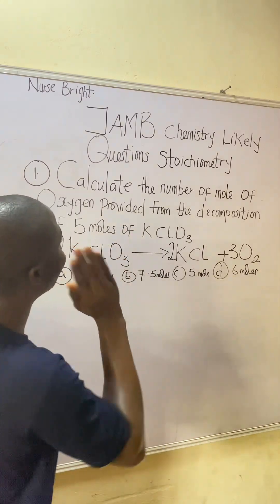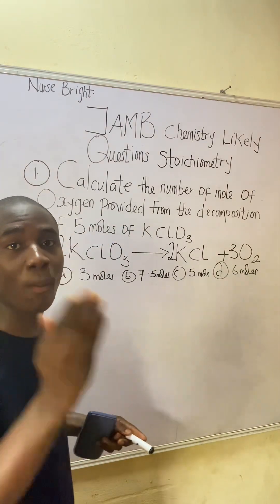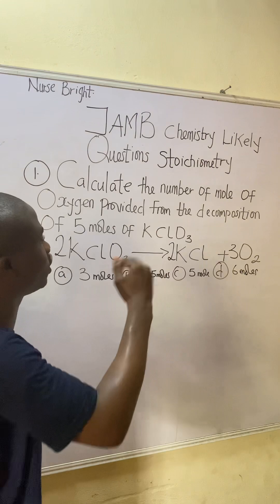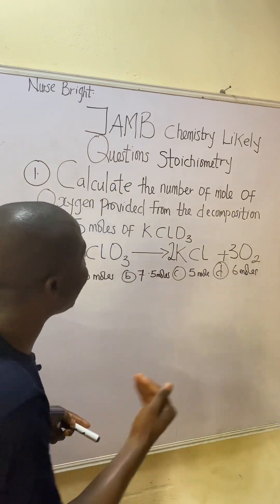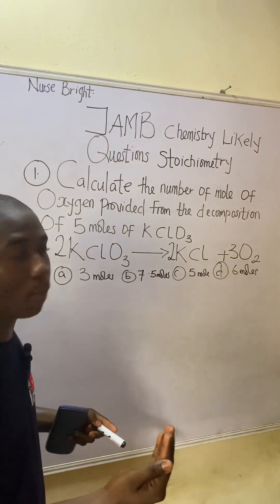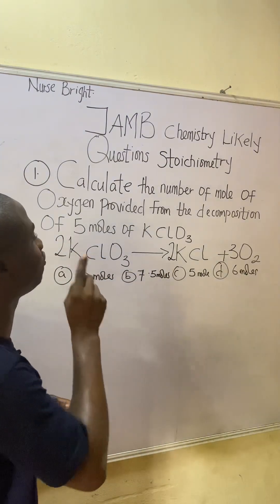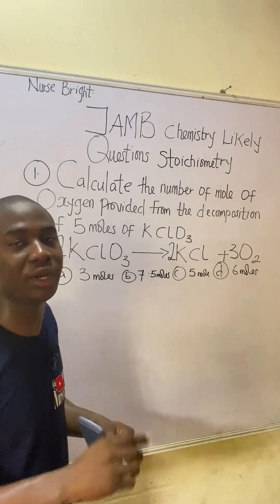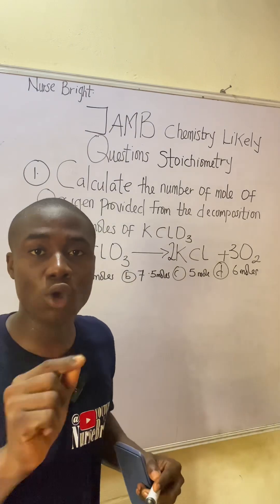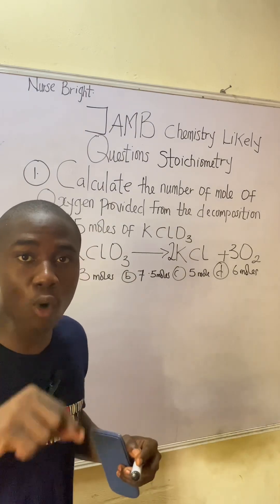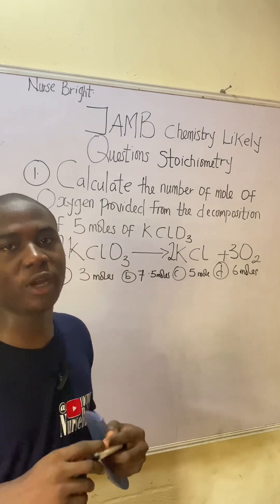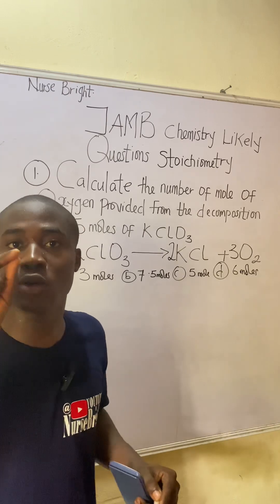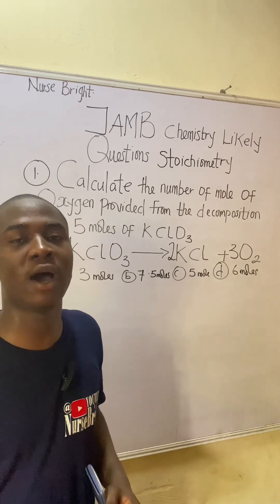The question says: calculate the number of moles of oxygen provided from the decomposition of five moles of KClO₃. To solve questions on stoichiometry of reactions, there is something you must take note of, which I want to talk about right now.